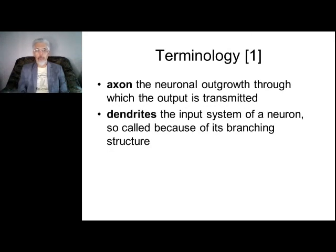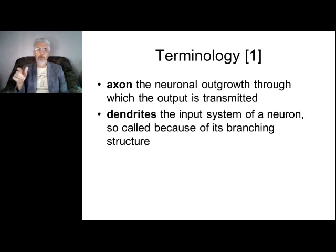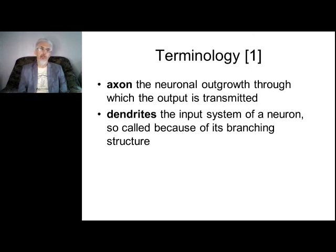The axon is the output channel. Our nervous system manipulates information encoded as impulse ratio — specifically time coding. Different information corresponds to different rates. Dendrites are the input channel. Both input and output channels use the same electrical parameters — the same voltage and ratio.